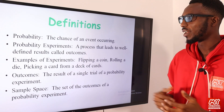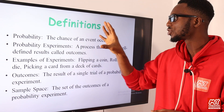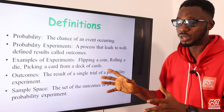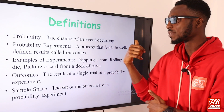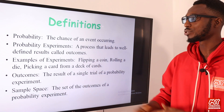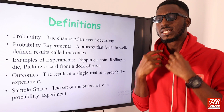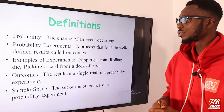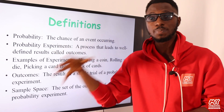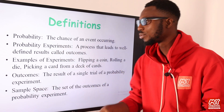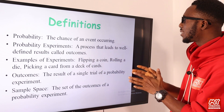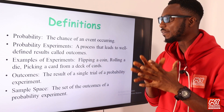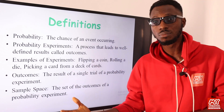So we have another perspective: probability is the chance of an event occurring. For us to determine probability, there are certain things we should get accustomed with. For instance, we have experiments. An experiment is a process that leads to a well-defined result called an outcome.